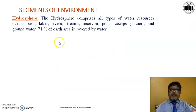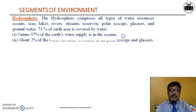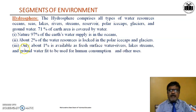The hydrosphere includes all types of water resources available on the earth and below the earth. 71% of the earth's area is covered by water. 97% of the earth's water supply is available in oceans. 2% of water sources are locked in polar ice caps and glaciers, and only 1% is available as fresh surface and underground water for human consumption.